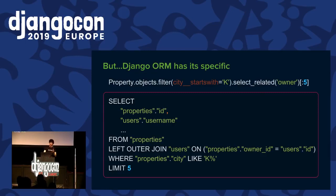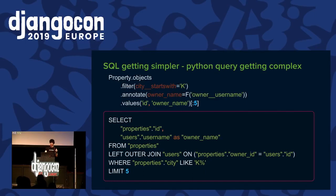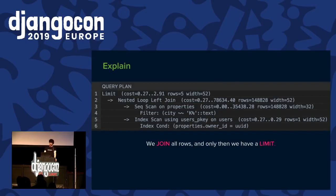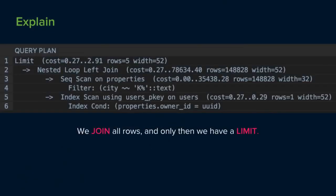For example, we have properties and owners, and we want to find five properties in a city starting with a certain letter, and get the username of the owner. We do a select_related, which performs a left outer join, and limit the fields. But if we look at the explain plan, first we find all matching properties — a huge amount — and only then we join owners to each row, and only after that we apply the limit. This is not performant — it's not the way we want to execute the query.